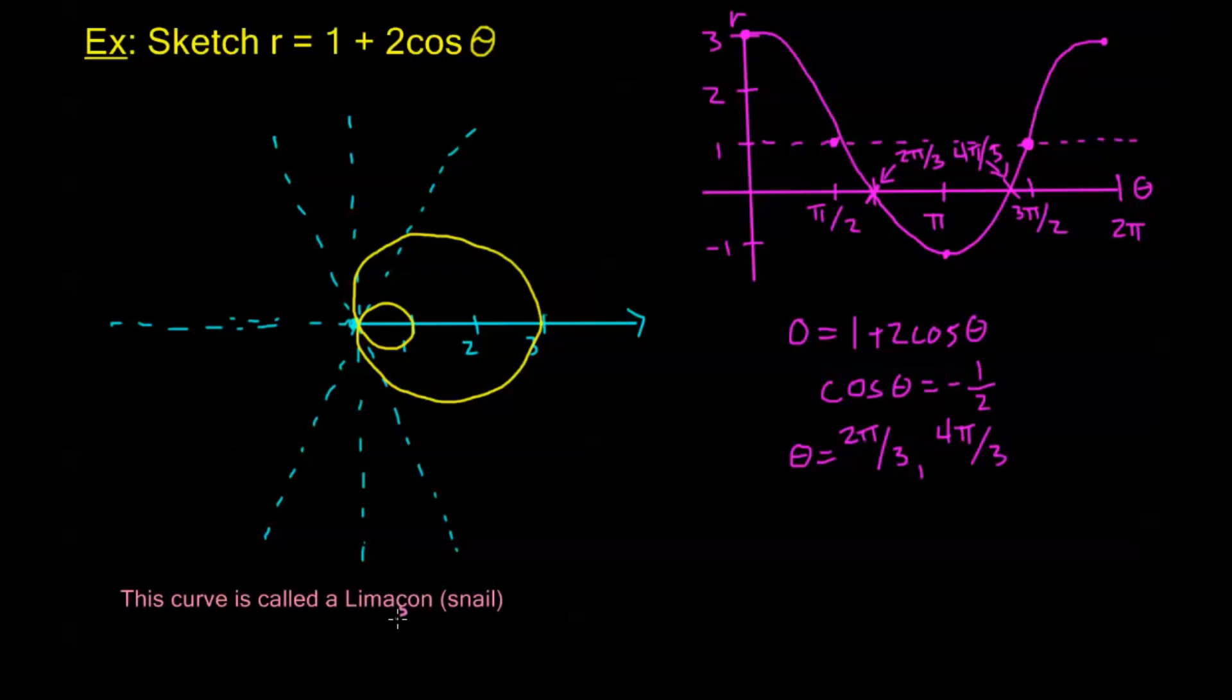We call this a limouson. Now this is a French word. There's a little accent on this C and I took French a long, long time ago but I believe that's called an accent circumflex and this is called a limouson. In French, this means snail. You see it looks kind of like a snail's shell, doesn't it?